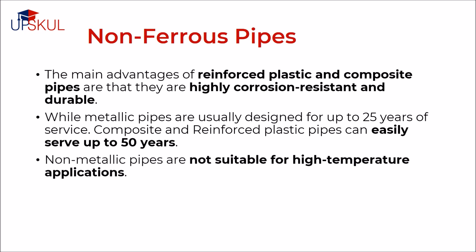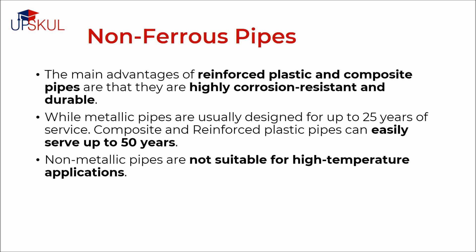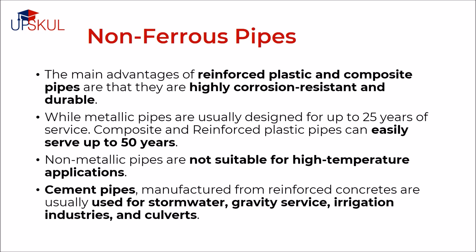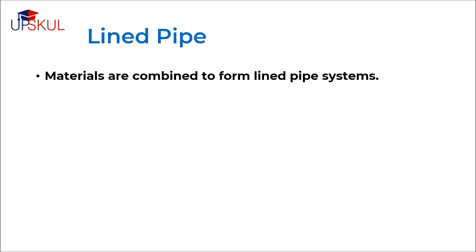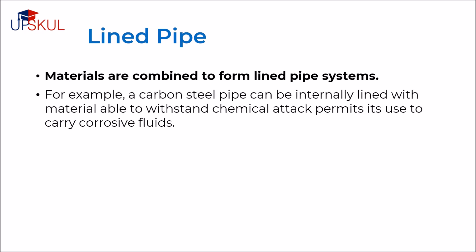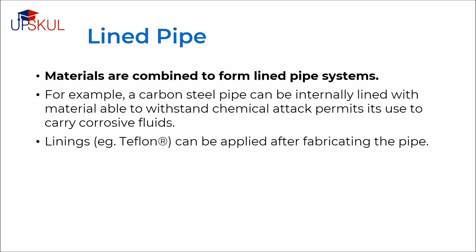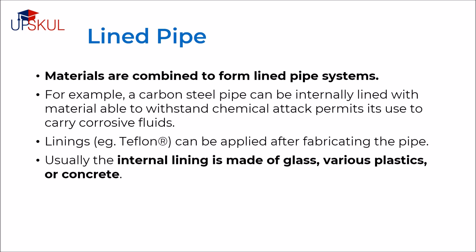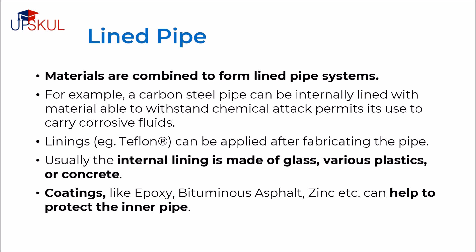However, their main limitation is temperature. Non-metallic pipes are not suitable for high temperature applications. Cement pipes manufactured from reinforced concrete are usually used for storm water, gravity service, irrigation industries and culverts. Some materials discussed just now have been combined to form lined pipe systems. For example, a carbon steel pipe can be internally lined with material able to withstand chemical attack, permitting its use to carry corrosive fluids. Linings like teflon can be applied after fabricating the pipe. Usually the internal lining is made up of glass, various types of plastics or concrete. Coatings can also be applied such as epoxy, bituminous, asphalt, zinc, etc. which can help to protect the inner pipe.